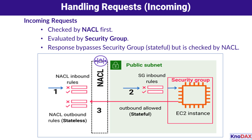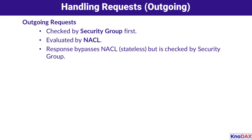Step three — the response. Since security groups are stateful, the outgoing response doesn't need any additional rules to be allowed; it simply flows back through the security group. However, it's a different story for the NACL. NACLs are stateless, so the outbound response must match an outbound rule in the NACL to leave the subnet. It's a layered approach where the NACL acts as the first line of defense at the subnet level, and the security group provides more specific controls at the instance level.